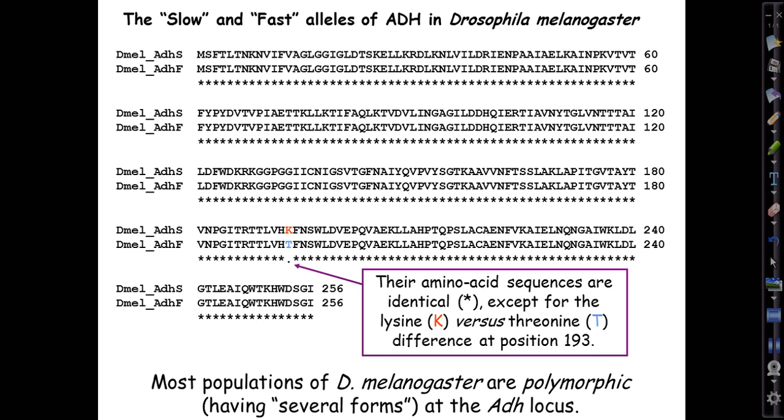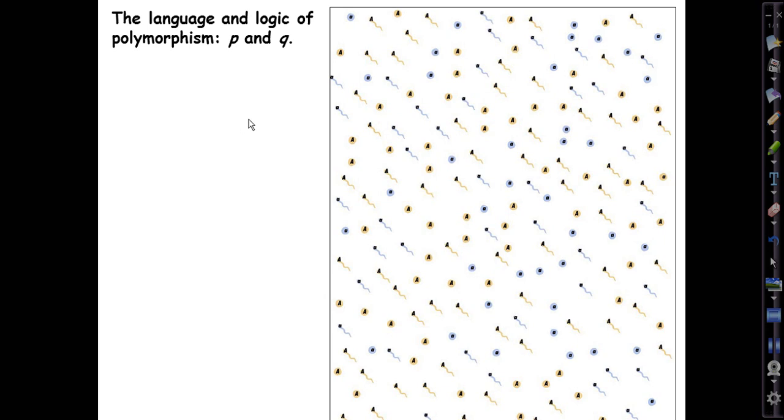Now, the language and logic of how we describe this change in allele frequencies, that is to say, how we describe the dynamics of genetic polymorphism. Remember, polymorphism simply means more than one form and has applied to genes or alleles. We use conventionally, but it's just a convention, p and q to refer to the current population frequencies of the two alternative alleles.